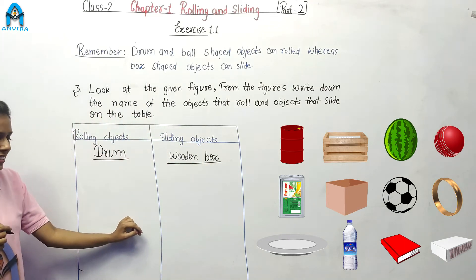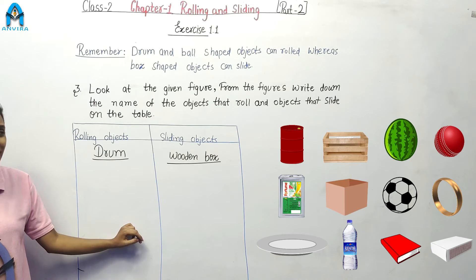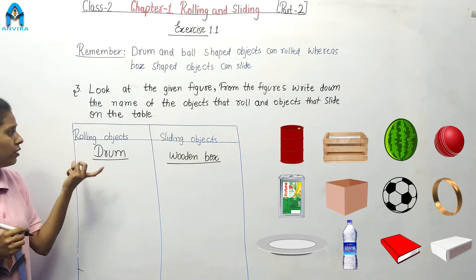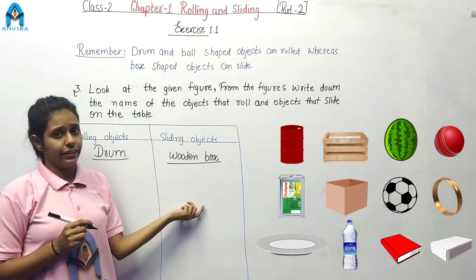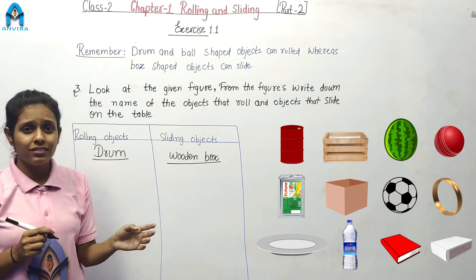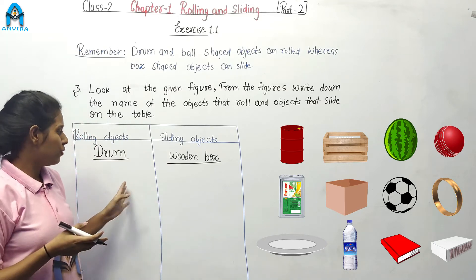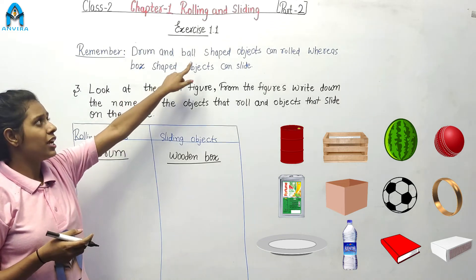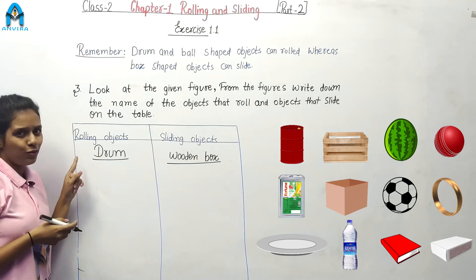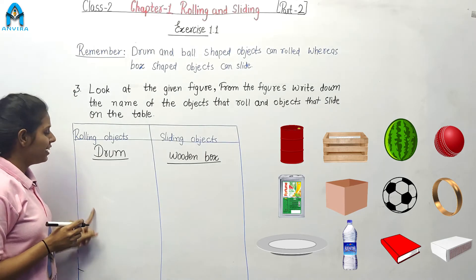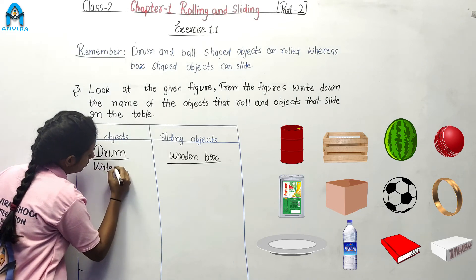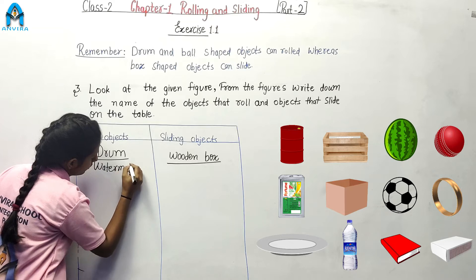Let's go to the next. What is this? Watermelon. Is watermelon rolling or sliding? The shape of watermelon is like a ball, and ball shaped objects can roll. So, we write watermelon on the rolling side.